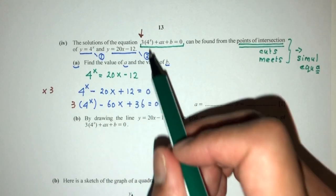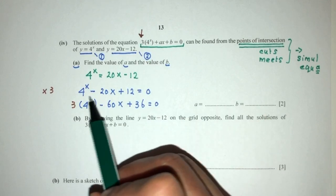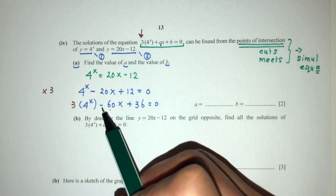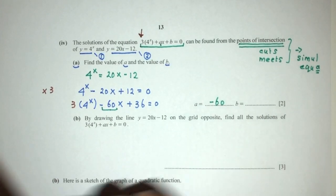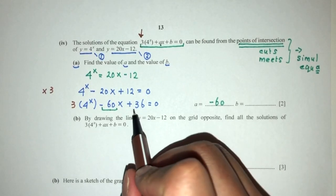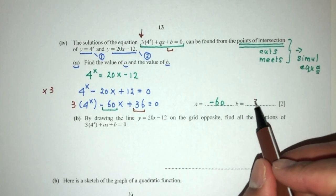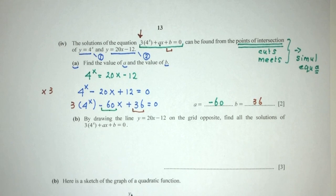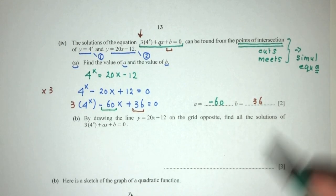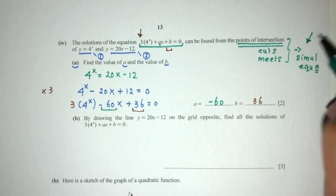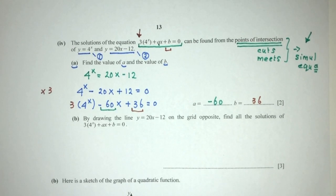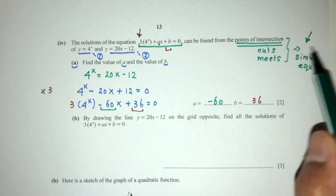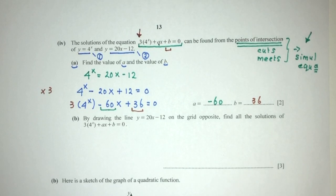Multiplying by 3 gives: 3·4^x - 60x + 36 = 0. Now comparing values with the given equation to find a and b: the coefficient of x has to be a = -60, and the constant term gives b = 36. Usually you will have to solve a simultaneous equation for your upcoming test. Always remember: whenever you see points of intersection or curves that meet, it will lead to some kind of simultaneous equation.